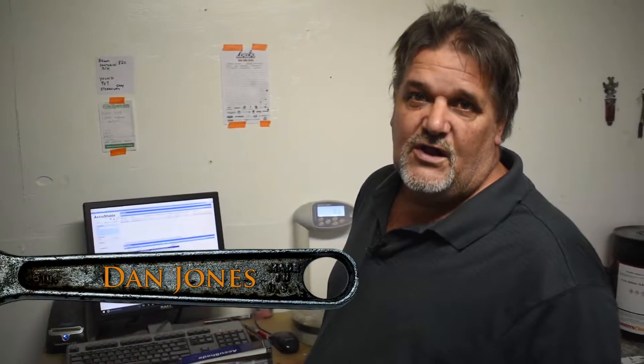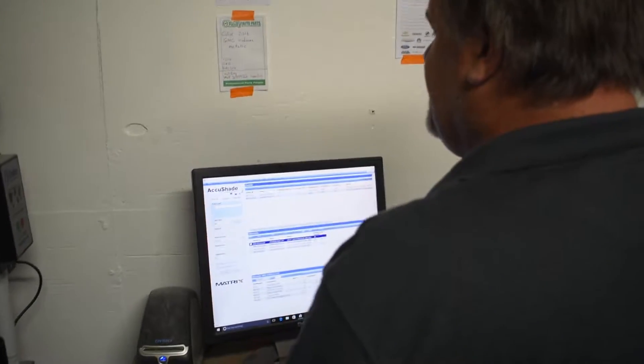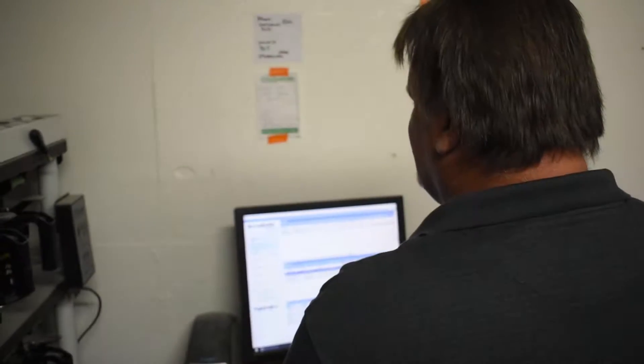Today we're going to go over color matching. What we have today is a 2015 Lexus. According to the paint code, which is a Q77, we have a Starfire Pearl.